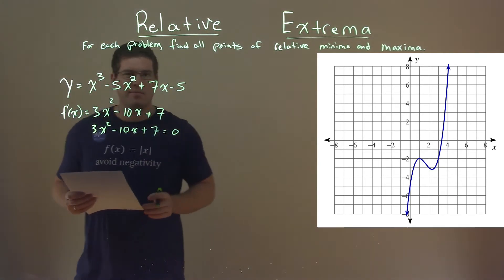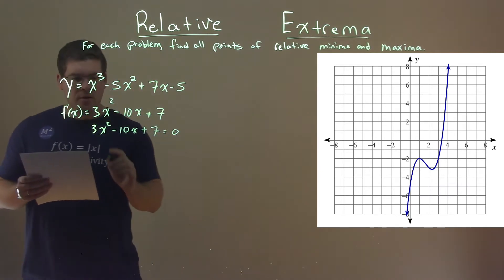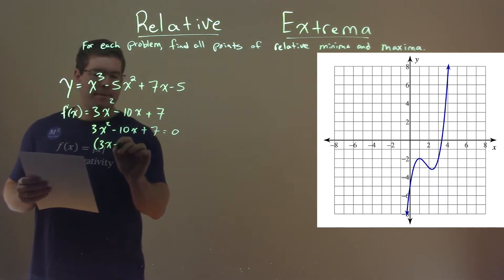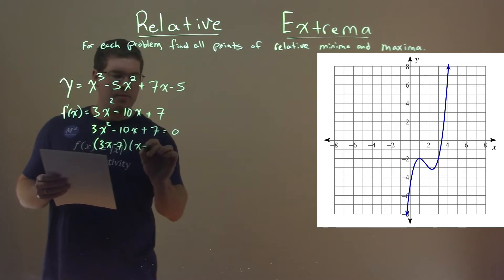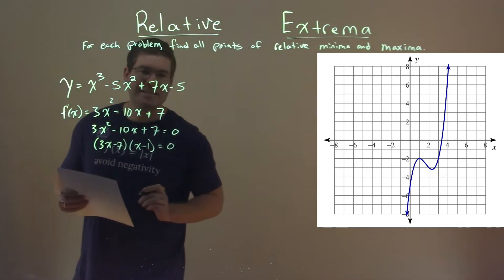Well, this function factors. So this factors out to be 3x minus 7 times x minus 1, and that's equal to 0.